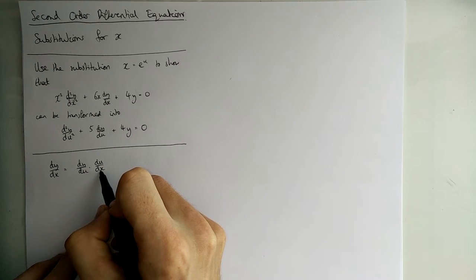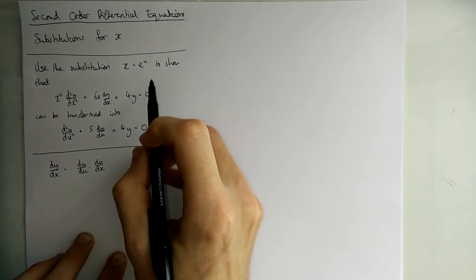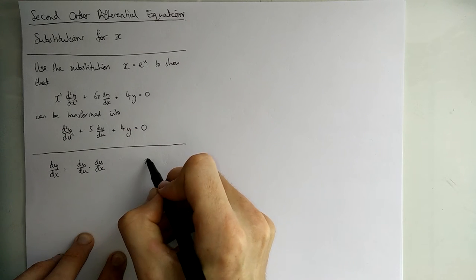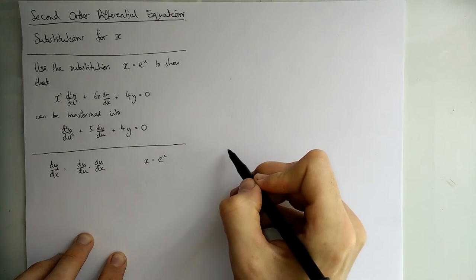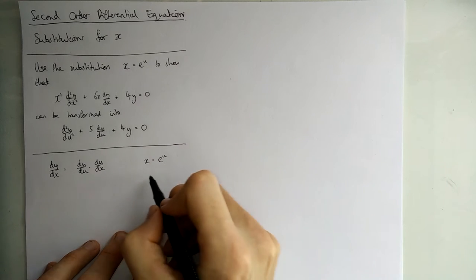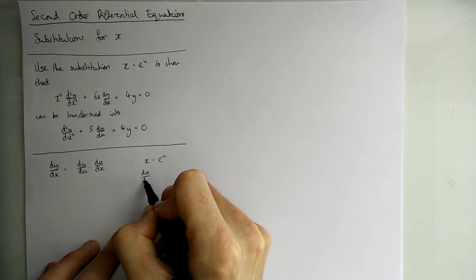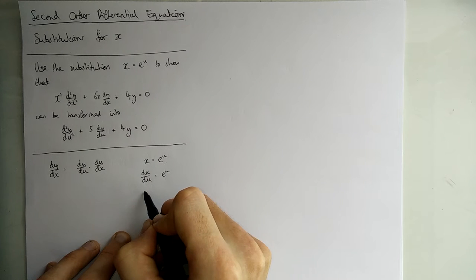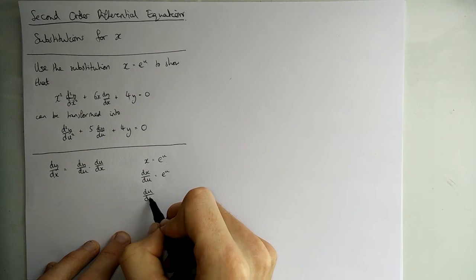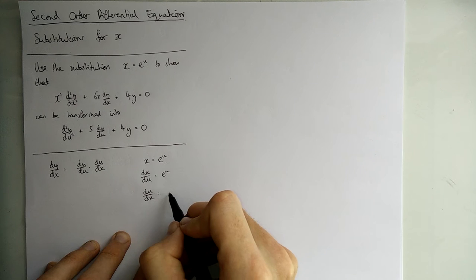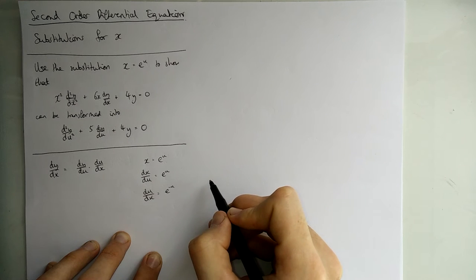The problem is we've still got a dx here. That's okay though because we can compute that using this thing: x is equal to e to the u. There's a couple ways of computing this. You can either just do dx/du and get e to the u, back here, and then flip it to get what you need. It's du/dx. That's one way of computing it.